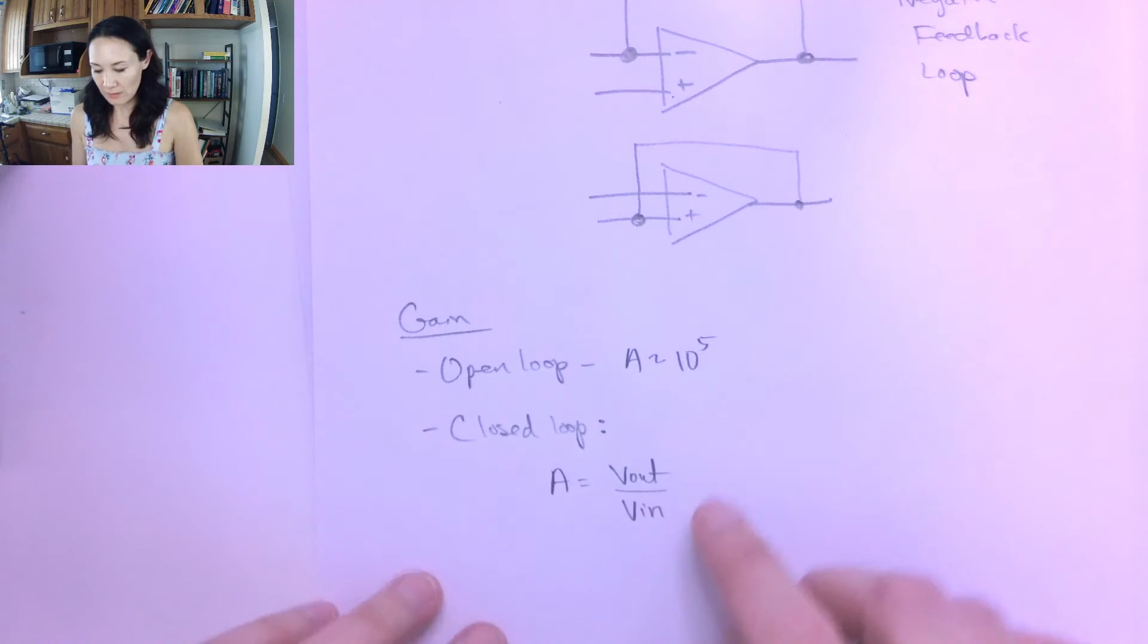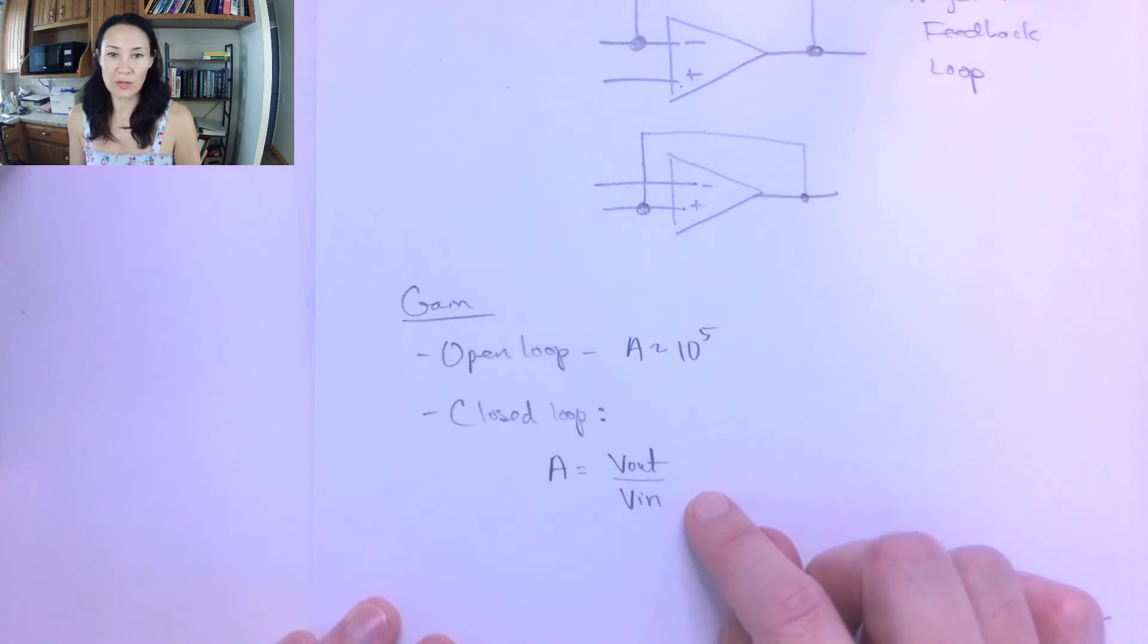So it makes sense that this would be, if you take the ratio of your output to your input, that would give you your gain. So how much of an increase or a decrease you had with respect to your input.